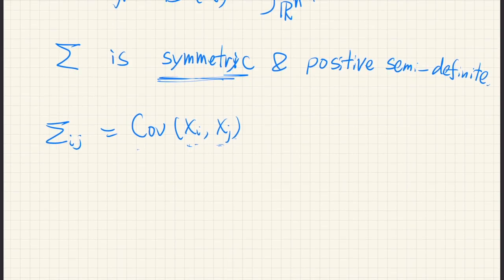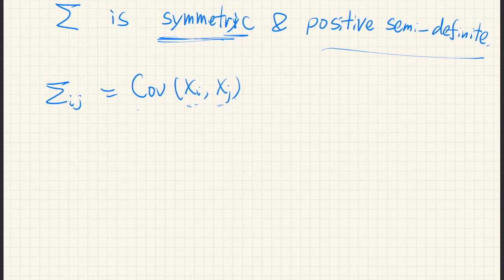And what positive semi-definite means is that for any vector, we have v transpose sigma v. So this is a scalar. This is a row vector, this is a column vector, this is an n-by-n matrix.